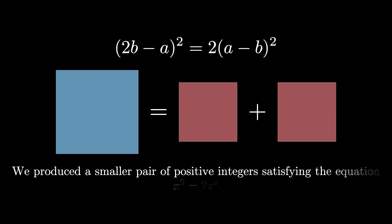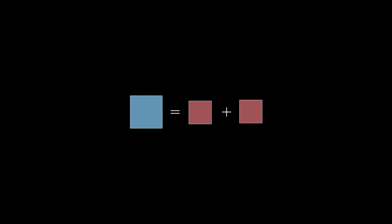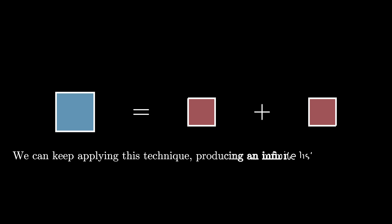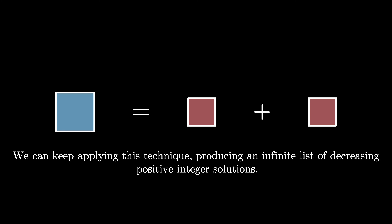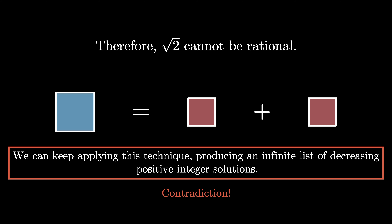This means we've produced a smaller pair of positive integer solutions to the equation x squared equals 2y squared. We can keep repeating the same process over and over again, each time using the carpets theorem to realize that the overlap square produced equals the sum of the areas of the two uncovered squares. But if we do this forever, we've produced an infinite list of positive integer solutions that are getting smaller at each stage. It's impossible to have an infinite list of decreasing positive integers, so we have a contradiction — the square root of 2 cannot be rational.